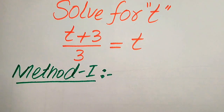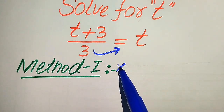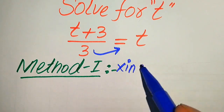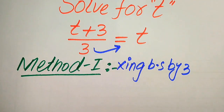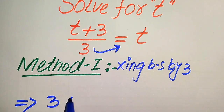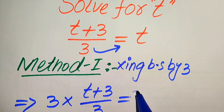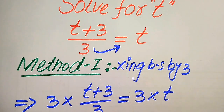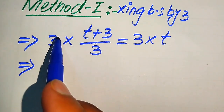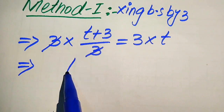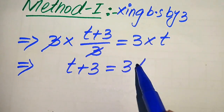Now we move towards the first method. In the first method we move the 3 to the right-hand side — in other words, we multiply both sides by 3. When we multiply both sides by 3, it becomes 3 multiplied by (t plus 3) divided by 3 equals 3 multiplied by t. The 3s cancel out and we get t plus 3 equals 3t.